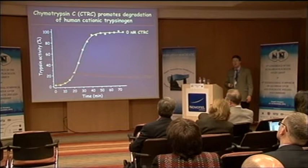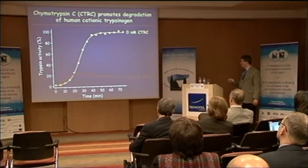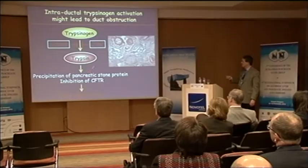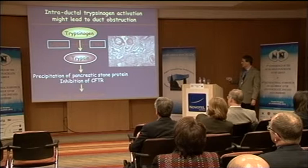Often in patients you find both CTRC and SPINK1 mutations together, and CFTR as well. What we don't really know is what trypsin does downstream. We have this term 'autodigestion' which describes our lack of understanding of what really happens. It's more than likely there's a specific downstream target, but we're not sure what it is.